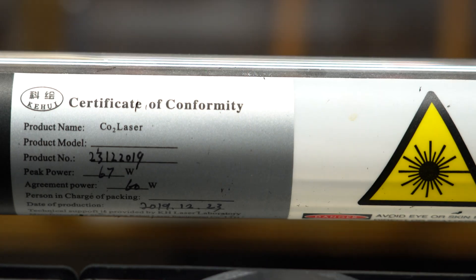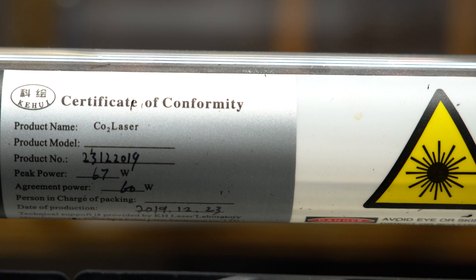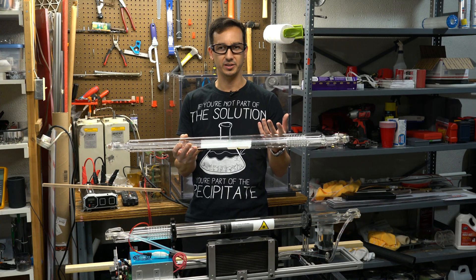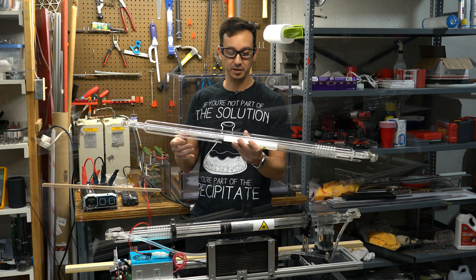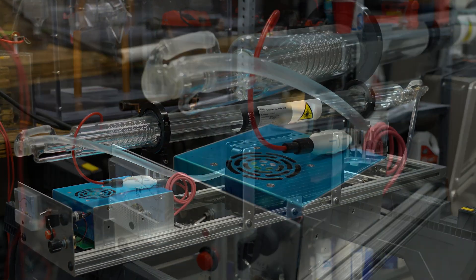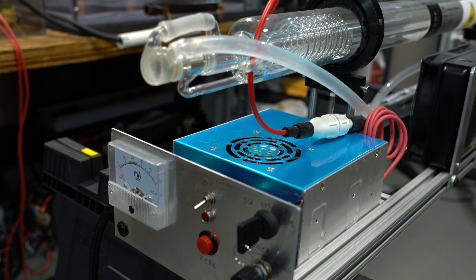As you can probably guess, at the heart of the laser is the laser tube. This is a 60-watt CO2 laser. This is the same kind of tube that you would find in most laser cutters that you can buy commercially. In fact, the commercial success of laser cutters is at the core of why I'm able to build this thing for so little money.